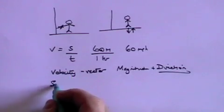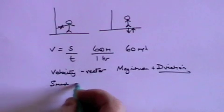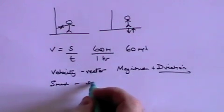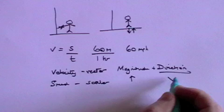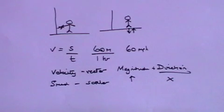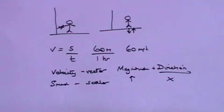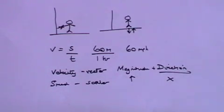Whereas speed is a scalar — it has magnitude but no direction. So you can have a speed of 30 miles an hour with no idea which direction you're going. But if you have a vector, we know both the magnitude, 30 miles an hour, and the direction, north.